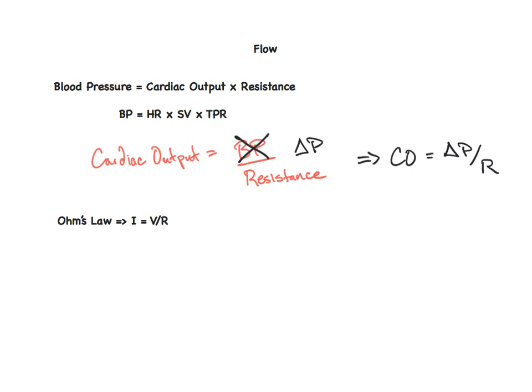In our body, the cardiac output can be thought of as the current that runs through the system. The changing pressure is the pressure difference between the arterial and venous sides, with the resistance being a component of both the vasculature and the blood itself.